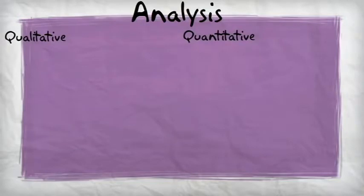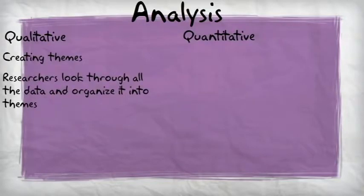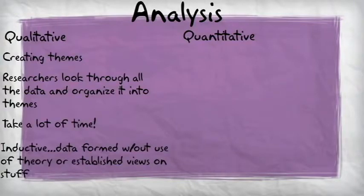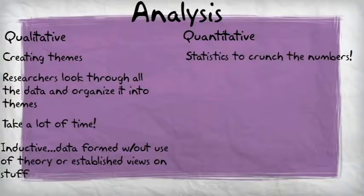Now let's talk about analysis. In qualitative research, analysis is all about creating themes. Researchers read their interviews to organize them into themes. On the other hand, in quantitative research, analysis involves using statistics to crunch numbers and figure out what those numbers mean.